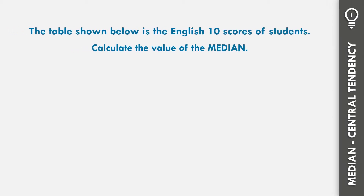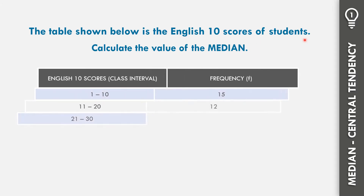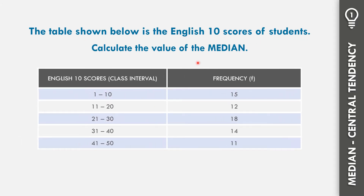In example number 1, let us solve: the table shown below shows the English 10 scores of students. Let us calculate the value of the median. The English scores from 1 to 10 have 15 students; from 11 to 20, 12 students; from 21 to 30, 18 students; from 31 to 40, 14 students; and from 41 to 50, 11 students.